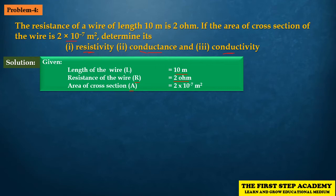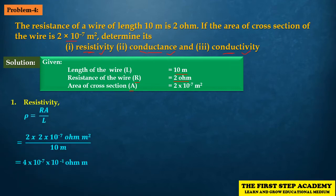We recall the three formulas one by one. First, resistivity: rho (ρ) is equal to R times A divided by L. Here R is the resistance of the material, A is the area, and L is the length. Comparing with the given values, we have R, L, and A all available.